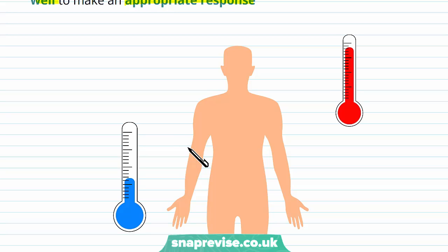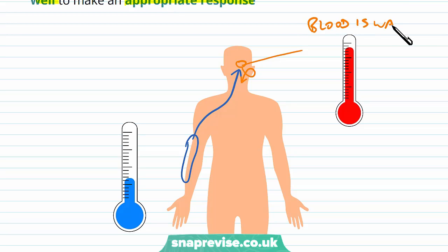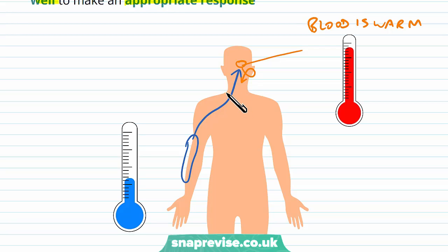The coordinator takes temperature information from the skin but also from the hypothalamus. The hypothalamus knows that the blood is very warm and that we're exercising, and that the reason we're sweating is because we need to cool down. So it realises the appropriate response is not to keep increasing temperature but to bring it down. The point is that it uses a variety of receptors and sources to work out the best response, rather than basing it on just one source of information.